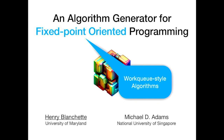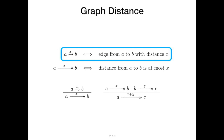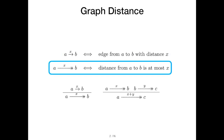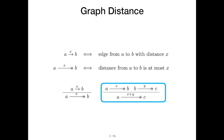Let's walk through an example of how writing in this style works and how transformations over it work. We'll start with a really simple example: graph distance. We can define graph distance where we have two relations — one that defines the edges in our graph and one for the distances. Then we have two inference rules: one to get the distance over edges, and a transitive-looking rule to combine two distances.